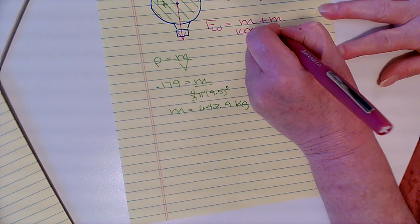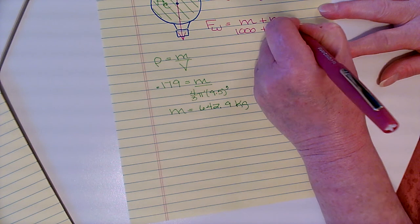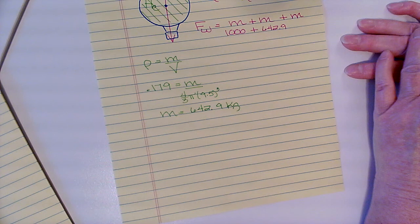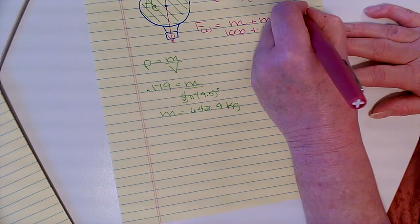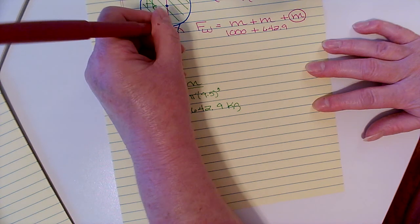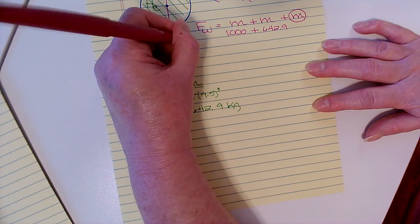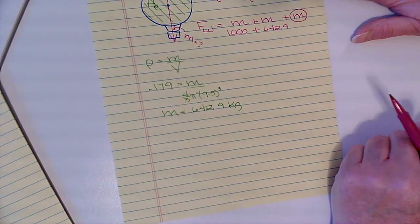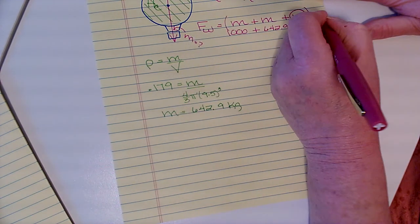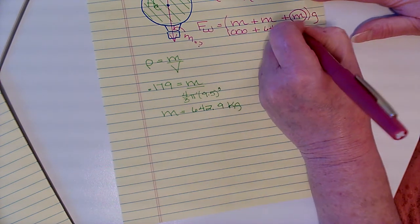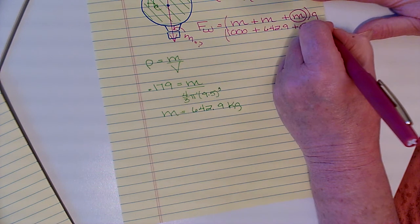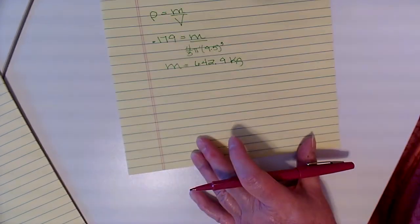We're going to put down plus 642.9. And then I'm going to put down another plus because what the problem asks us to solve for is how much extra mass can we carry. It's like, how much extra cargo could we put in here and still have my balloon float? So Fw equals m times g. I'm going to put an extra m here - that's what we're actually solving for - times g.